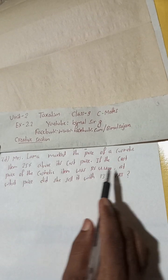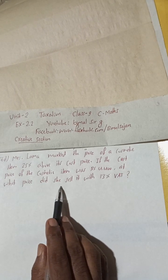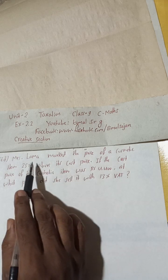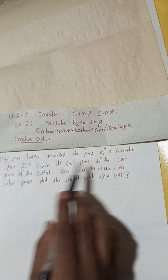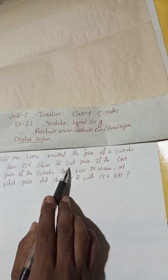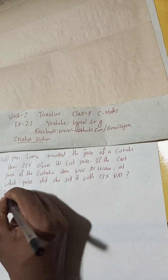Question 70: Mrs. Lama marked the price of a cosmetic item 25 percent above its cost price. If the cost price of the cosmetic item was Rs. 4400, at what price did she sell it with 13 percent VAT? So now, Mrs. Lama marked the price of a cosmetic, so this mark price is 25 percent above its cost price. Solution.